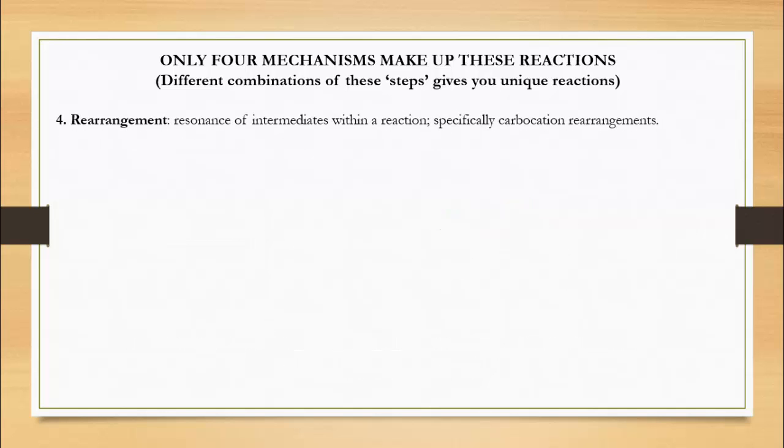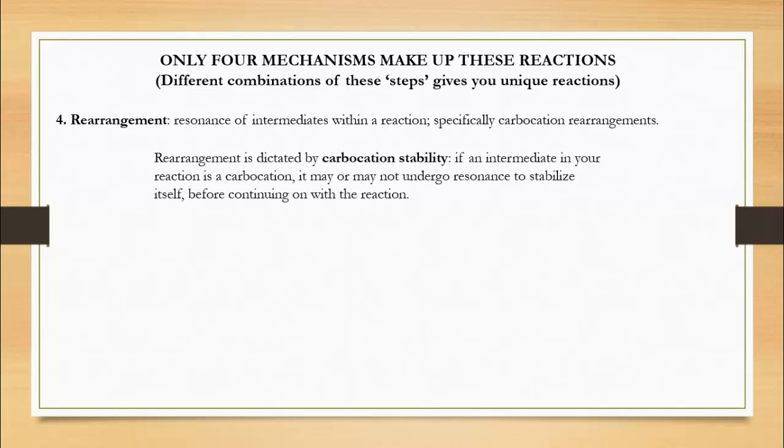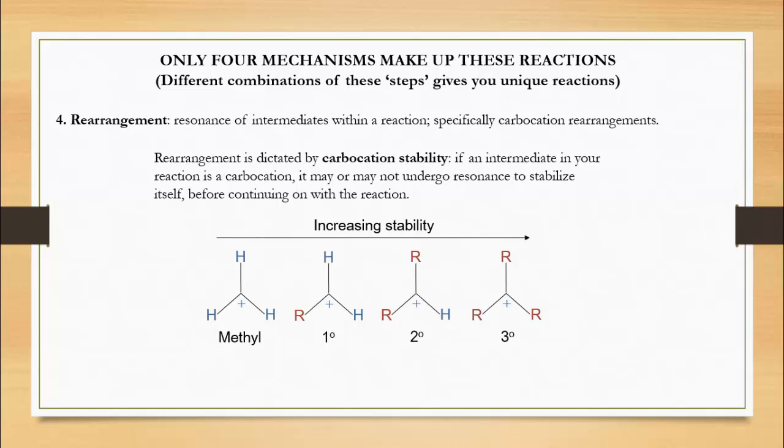The last mechanism is rearrangement, which is simply resonance in a reaction. In the majority of your reactions at this point, rearrangement will be induced by unstable carbocations looking to stabilize themselves. In order to successfully interpret this mechanism, you need to understand carbocation stability, which is shown here. Note that a carbocation will never rearrange itself from a more stable state into a less stable state.